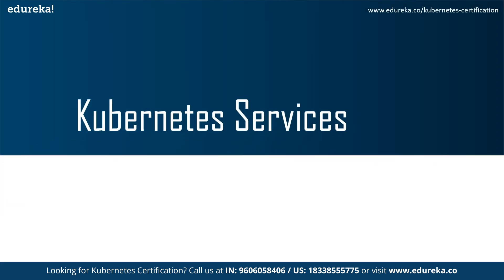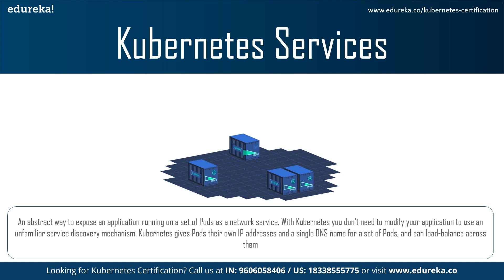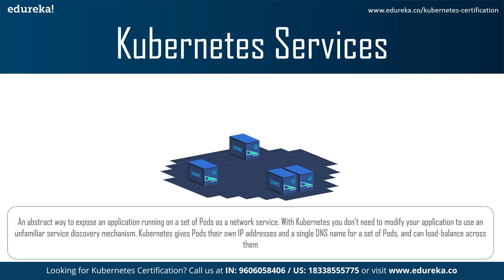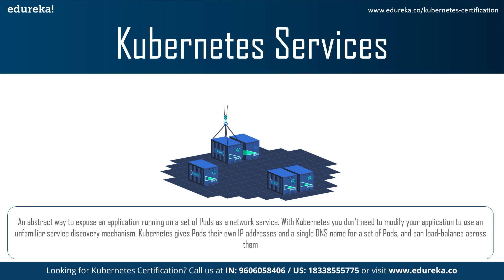Let us now see what Kubernetes services are. A Kubernetes service is a logical abstraction for a deployed group of pods in a cluster. Since pods are ephemeral, a service enables a group of pods providing a specific function — such as web services or image processing — to be assigned a name and a unique IP address. As long as the service is running, that particular IP address will not change. The difference between a service and a deployment is that a deployment launches pods with containerized applications ensuring the necessary number of replicas is running, while a service exposes an interface to those pods enabling network access from within or outside the cluster.